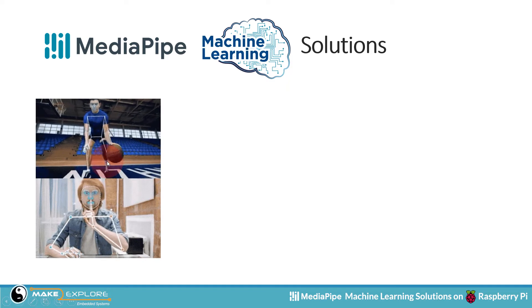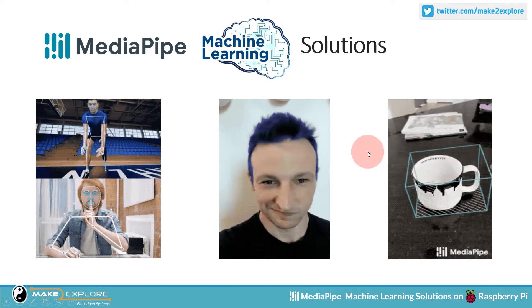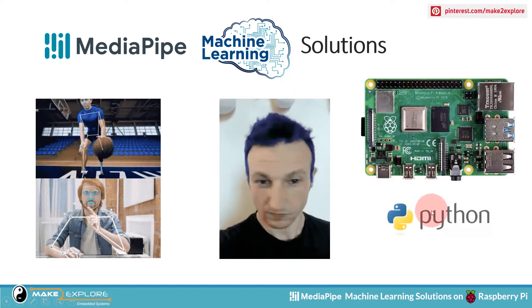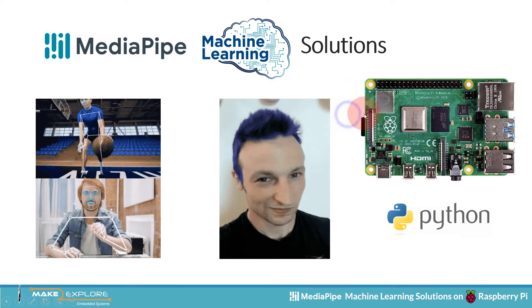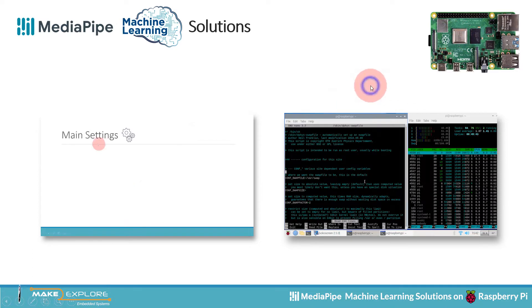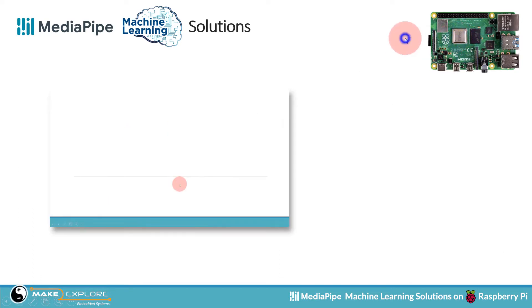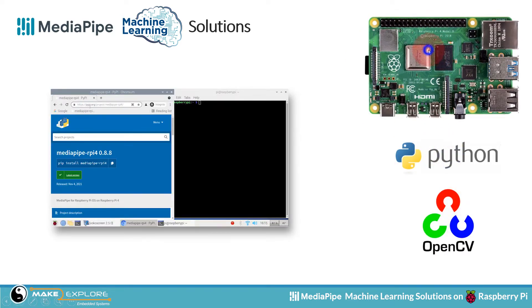We will also cover holistic tracking, hair segmentation, box tracking, objectron, and more. Before going forward, if you want to replicate these solutions at your desk, you need to install the MediaPipe Python package on your Raspberry Pi. We have separate video tutorials explaining step by step how to configure and optimize Raspberry Pi for vision-based projects, and another tutorial on how to install the MediaPipe package. Links are in the description box.